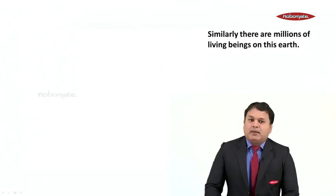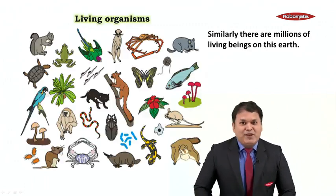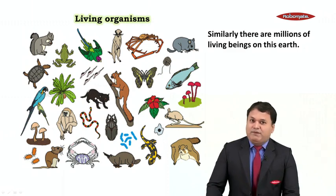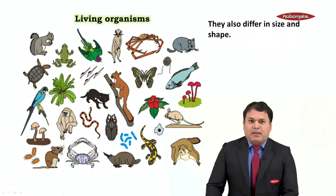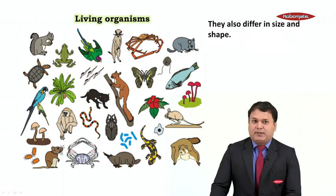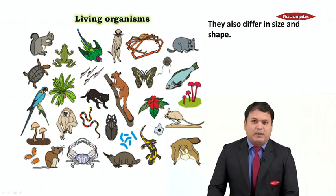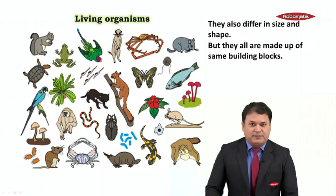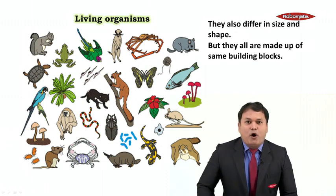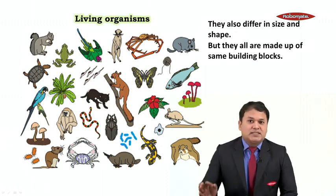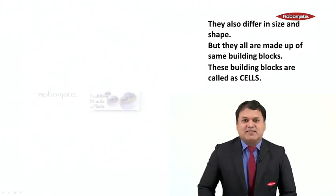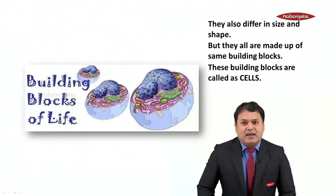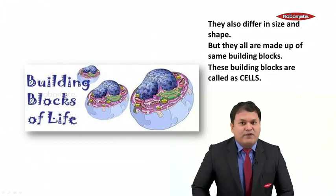Now similarly, there are millions of living organisms on this earth. We have so many plants, animals and human beings around us. These living organisms also differ in size and shape — they are so very different from each other. But they are all made up of the same building blocks, and these building blocks of living organisms are called cells. So we say that cells are the building blocks of life.